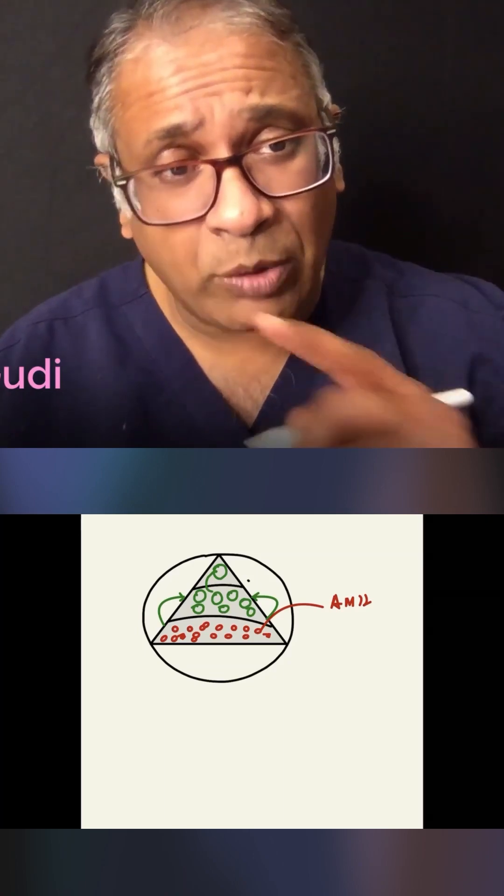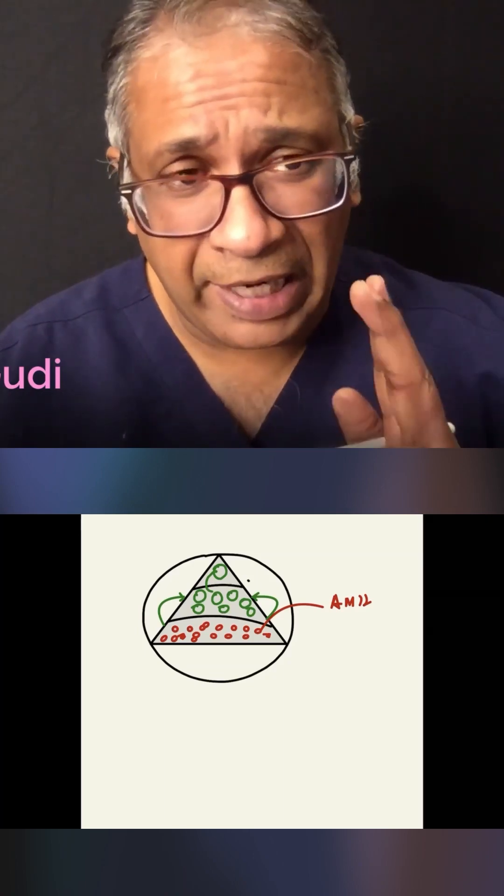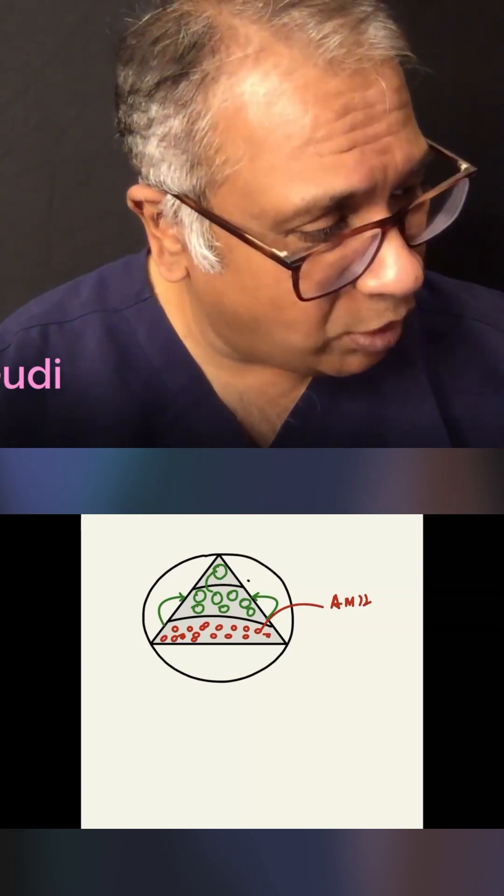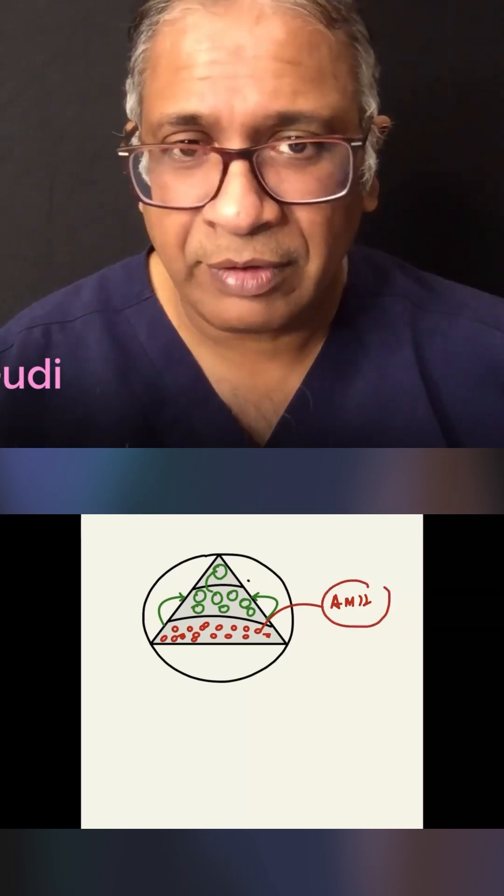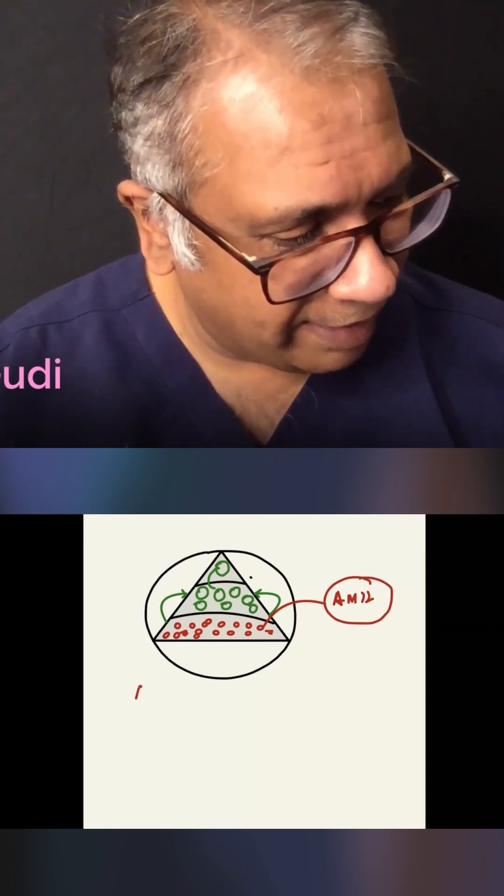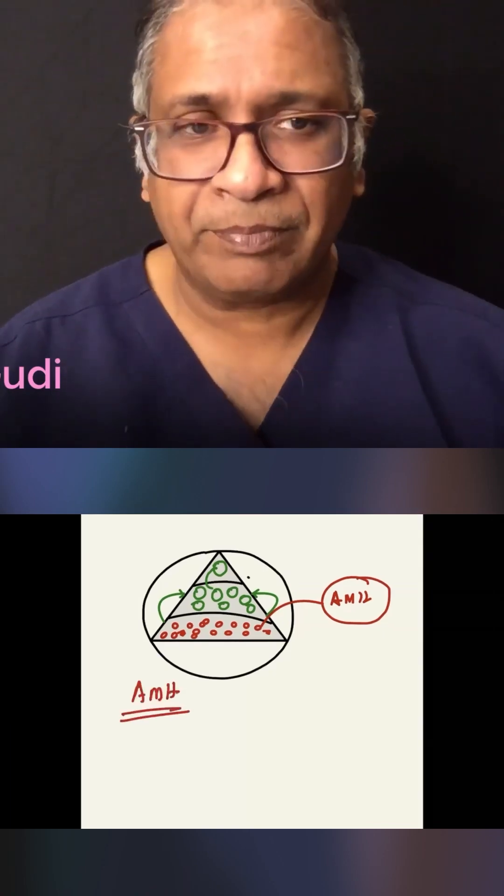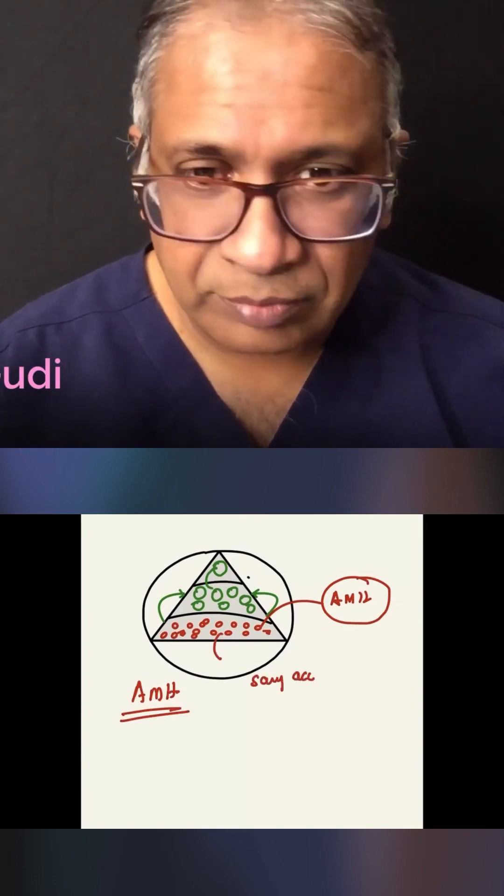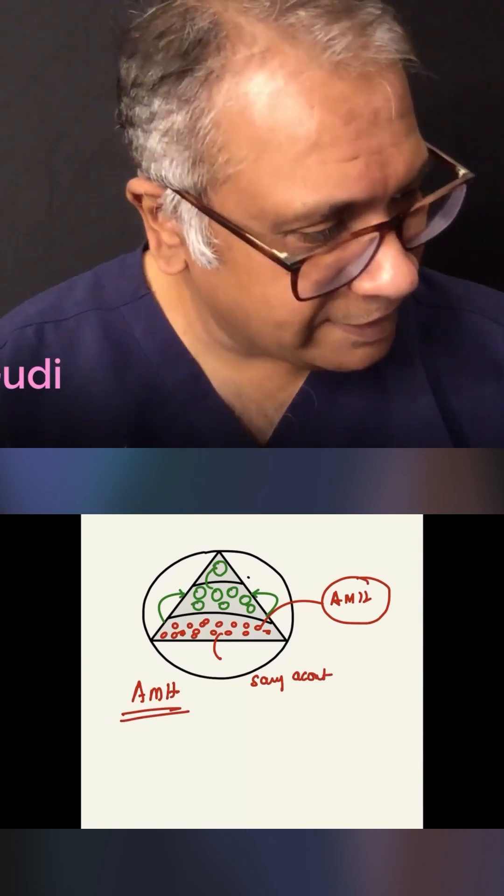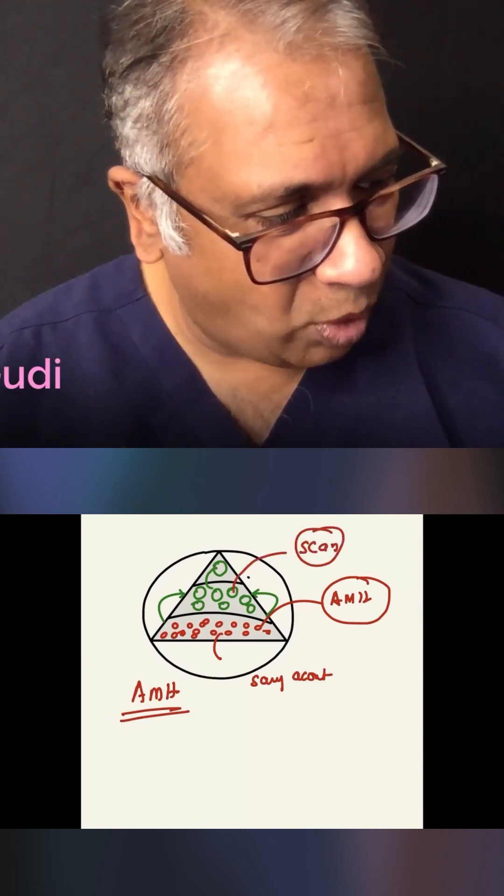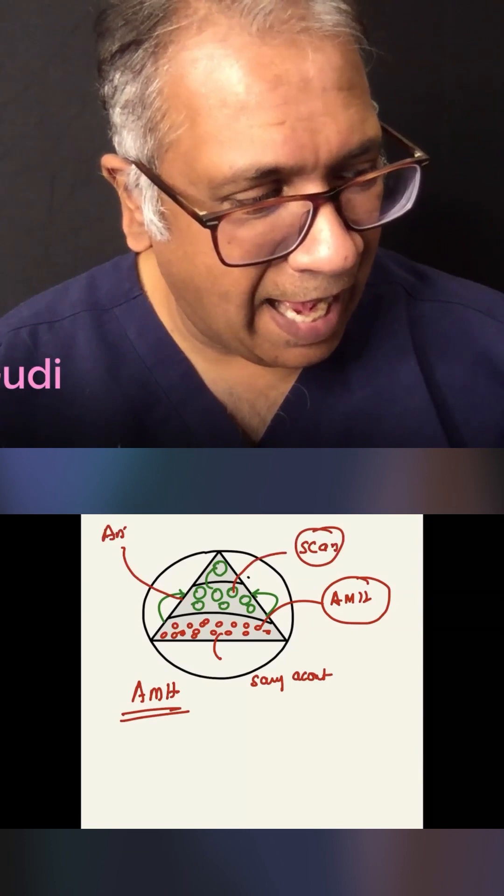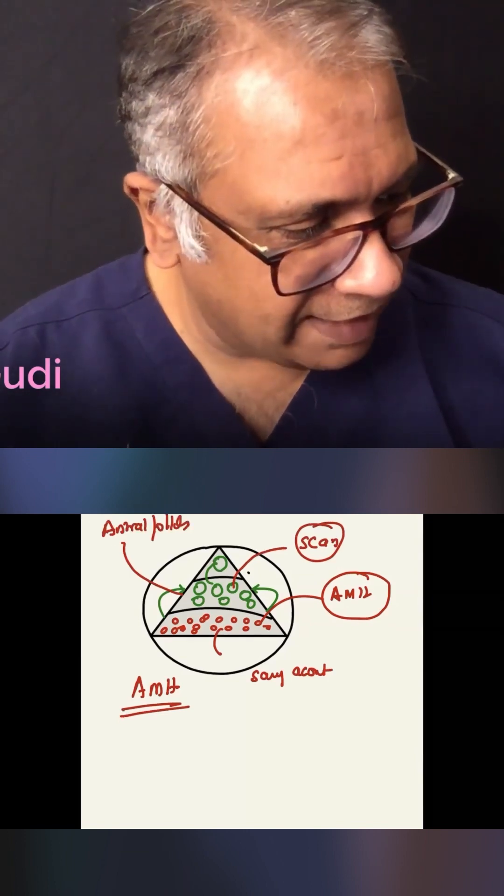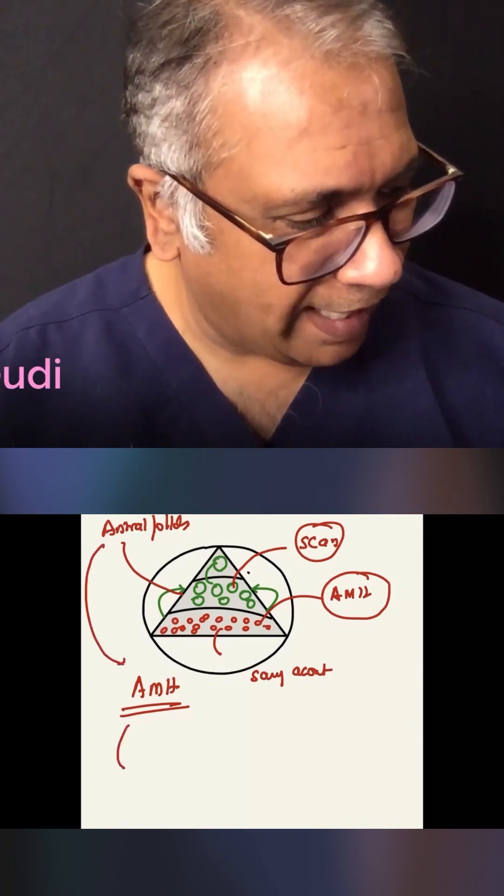So how do you know about your egg count? You know your egg count from two basic things. One is what is the long-term reserve? What is the AMH? This is like the savings account. This is what you see on a scan and these are called antral follicles. Combine this and this and that is your egg count.